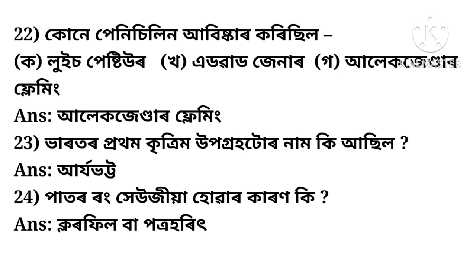The next question asks the name of India's first artificial satellite. The answer is Aryabhatta. The following question asks why leaves are green. The answer is Chlorophyll. Then a question about a process — options include bap, naibap, and potra horit.